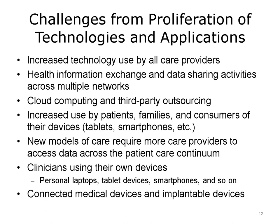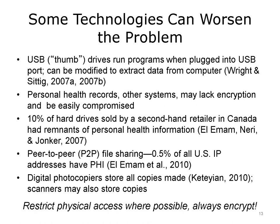Technology itself can worsen the problem. A widely cited study by Wright looked at USB drives — sometimes called thumb drives — commonly plugged into computers. These drives run a program that enables their use when plugged in, and that program can be modified to extract data from the computer. So if that computer has personal health information on it, the thumb drive can basically copy it. Some personal health record systems and consumer-targeted health applications may not have encryption functionality and could be easily compromised. Another analysis found that 10% of hard drives sold by second-hand retailers in Canada had remnants of personal health information on them, because when computers are disposed of, the hard drives are not completely wiped clean.